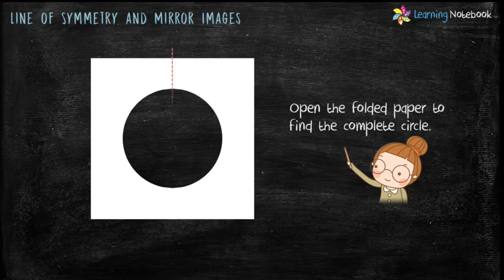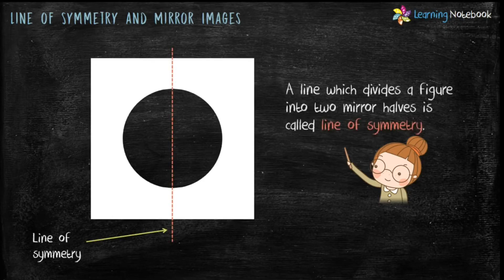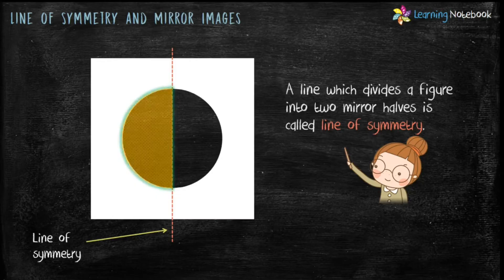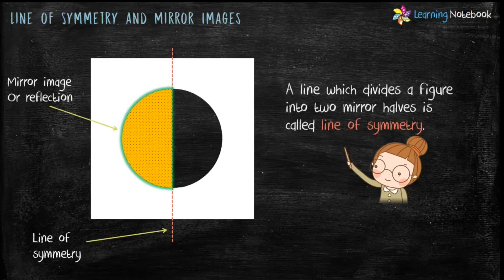Now draw a line where the paper was folded. This line is called line of symmetry. By definition, a line which divides a figure into 2 mirror halves is called line of symmetry. Each mirror half is the mirror image or reflection. In this, one semicircle is the mirror image of the other semicircle.